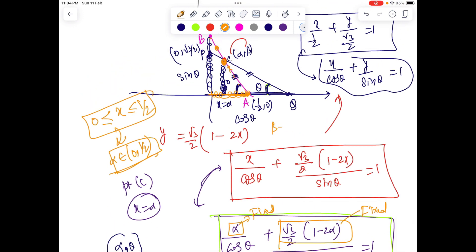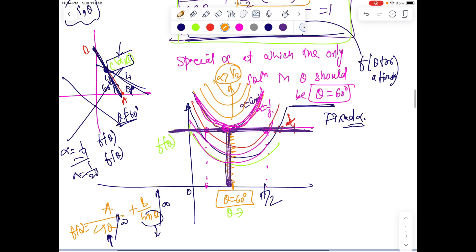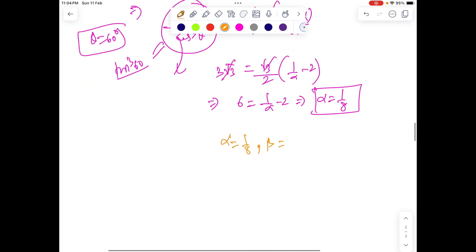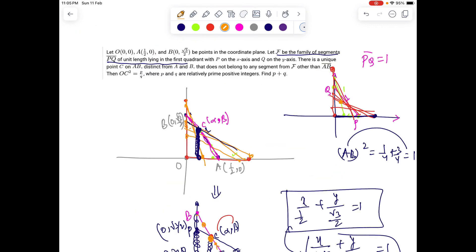Now with alpha equals one-eighth, we can easily calculate beta because that lies on this line. With one-eighth, we get beta equals root 3 over 2 times 1 minus 2 times one-eighth, which gives 3 root 3 over 8. Our question was just to find this distance. I enjoyed the problem.